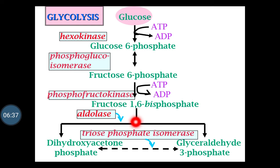Dihydroxyacetone phosphate gets converted to glyceraldehyde 3-phosphate, catalyzed by the enzyme triosephosphate isomerase. Here, the first phase of glycolysis ends.